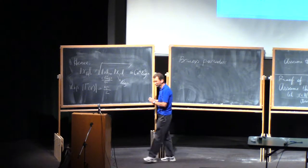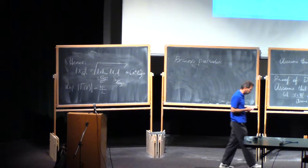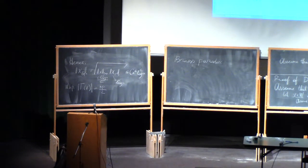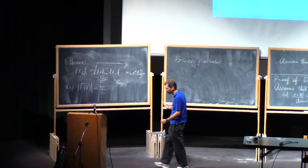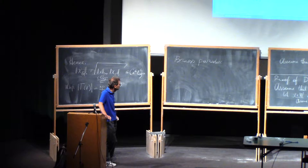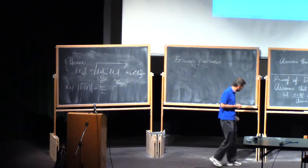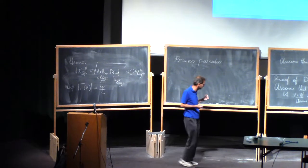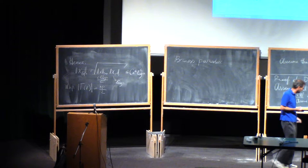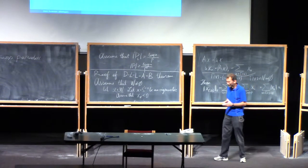The Braess Paradox was observed by civil engineers in the 1960s and it says that if you add a highway to an existing highway network, you may increase congestion. This is counterintuitive but happens in practice. There were attempts to explain the Braess Paradox mathematically, and the most popular model was suggested by Fan Chang, who formulated it as follows: we have to model the highway network and the congestion.